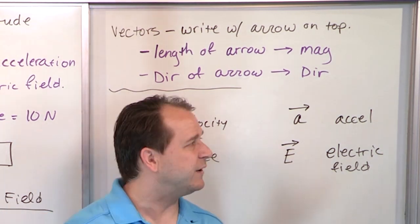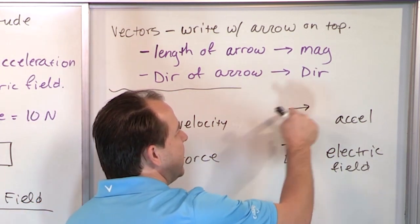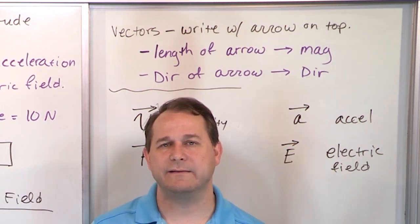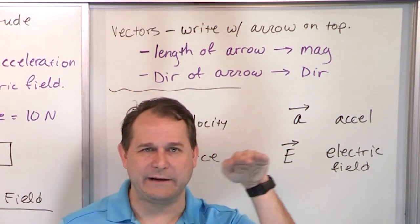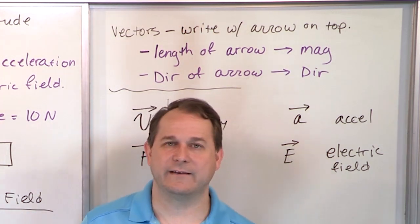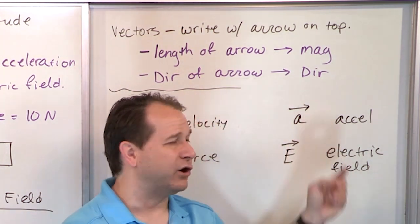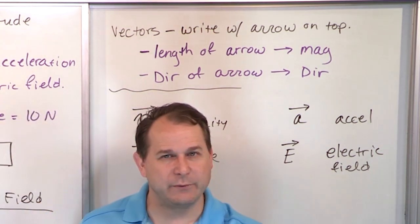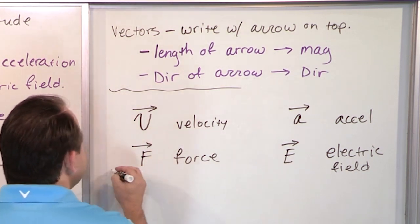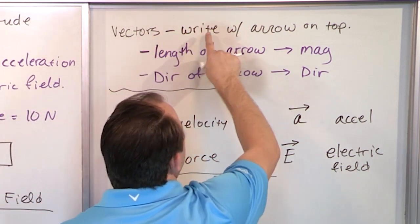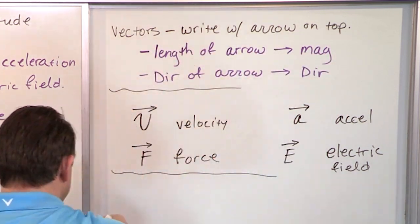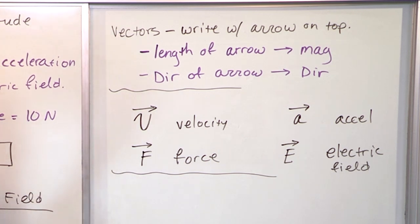Some books, instead of an arrow on top, just put a bar on top. The problem is that gets confusing because some books use a bar on top to indicate the average value of something — like the average of grades in the classroom. So it can get confusing. Also, some books don't put arrows at all; they just bold the variable, so a bold capital V means vector. It depends on the book, but most of the time you'll see vectors with an arrow on top.